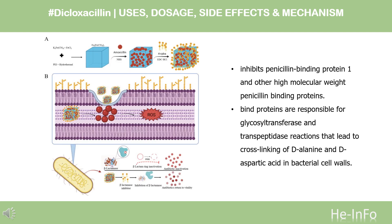Mechanism of Action. Dicloxacillin exerts a bactericidal action against penicillin-susceptible microorganisms during the state of active multiplication. All penicillins inhibit the biosynthesis of the bacterial cell wall. By binding to specific penicillin-binding proteins (PBPs) located inside the bacterial cell wall, dicloxacillin inhibits the third and last stage of bacterial cell wall synthesis. Cell lysis is then mediated by bacterial cell wall autolytic enzymes such as autolysins. It is possible that dicloxacillin interferes with an autolysin inhibitor.